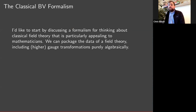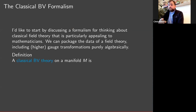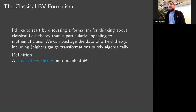This is an algebraic characterization of the data of a field theory, including permitting for gauge theories or more exotic higher gauge transformations, like higher gauge theories in natural language. I'll give a general abstract definition first, then try to contextualize and interpret it — how to read it and how to think about it — and then give some examples of instances of this definition. I'm going to define something called a classical BV theory, which is a classical field theory on smooth manifolds M.